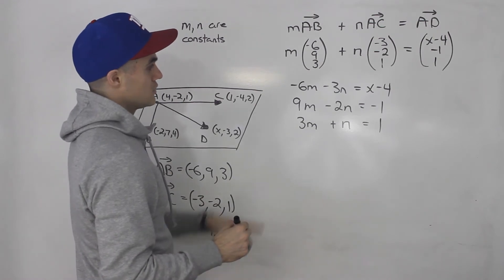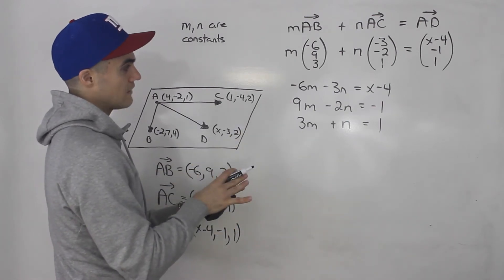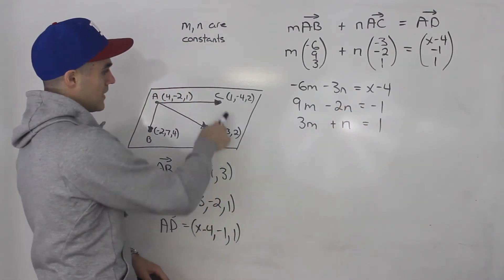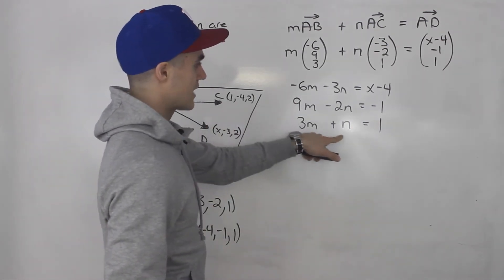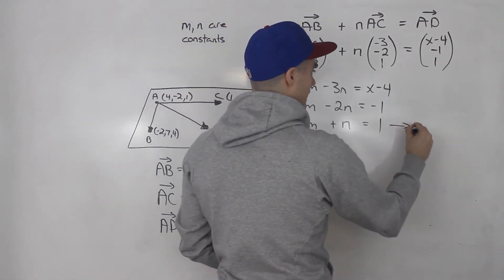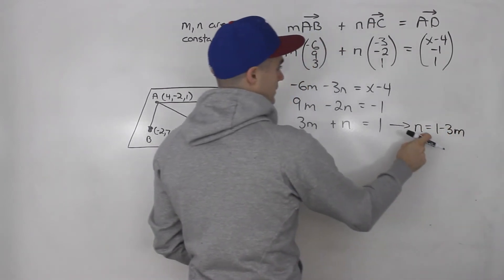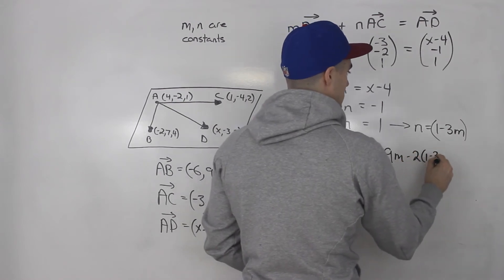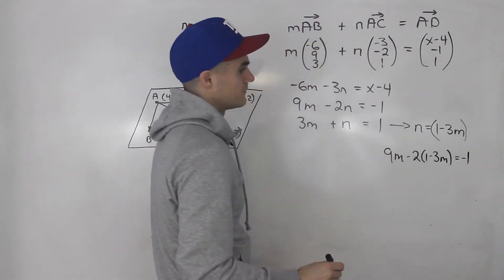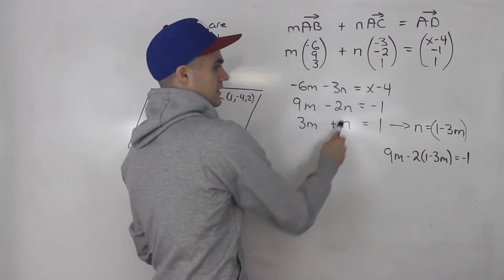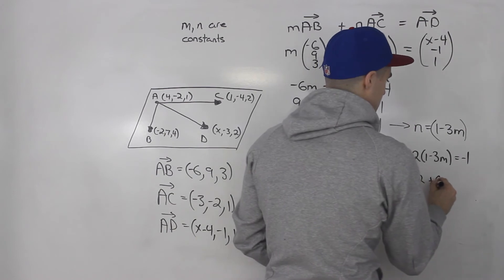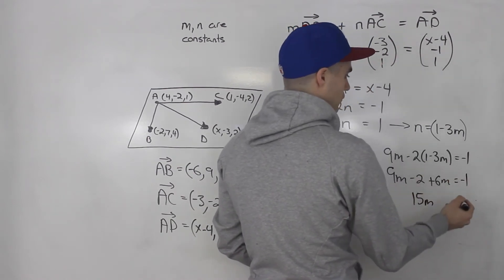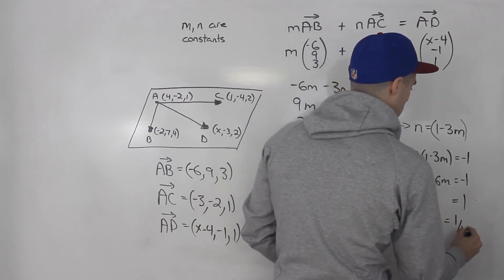We can use equations two and three to solve for M and N. From the third equation, isolate N: N = 1 − 3M. Substitute into the second equation: 9M − 2(1 − 3M) = −1, which gives 9M − 2 + 6M = −1, so 15M = 1, meaning M = 1/15.